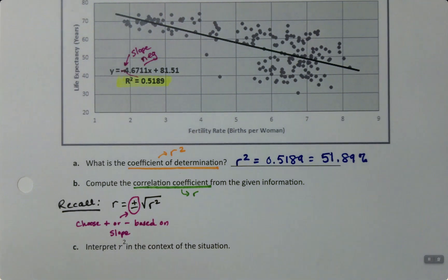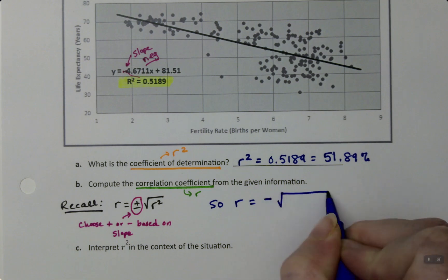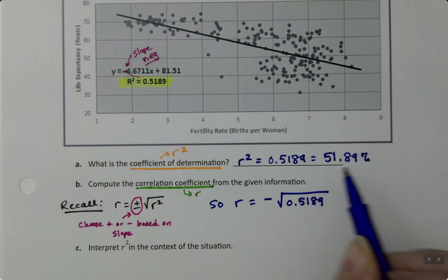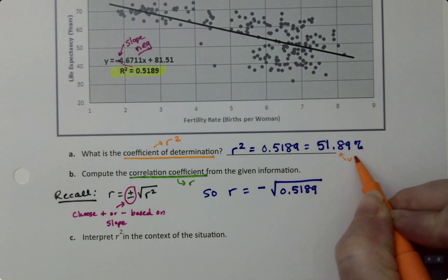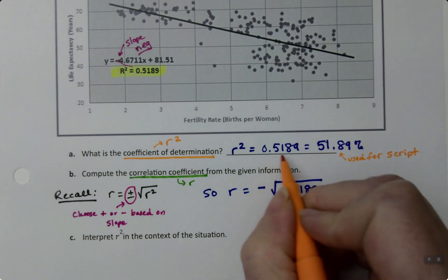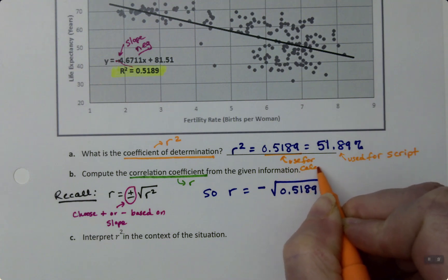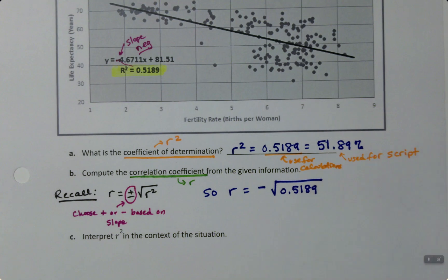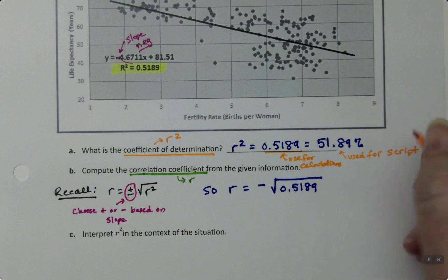Alright, so that means for us, R is the negative square root, and we always use the decimal, never use the percent. Percents are just - percents are used for the script. The decimal is used for calculations. Alright, so I'm going to use the 0.5189, never the percentage. Percentage is used for the script.